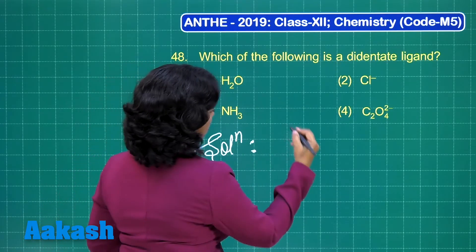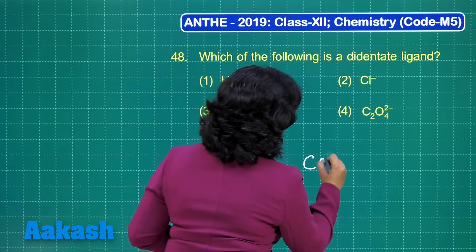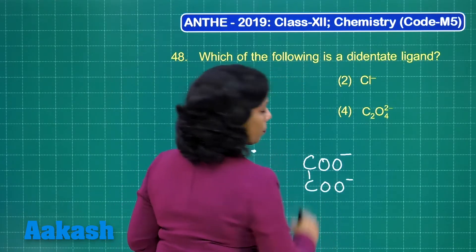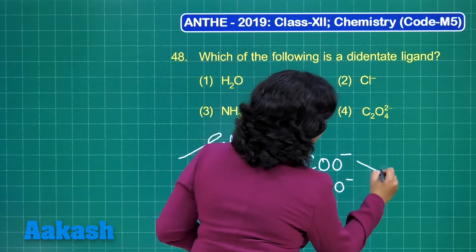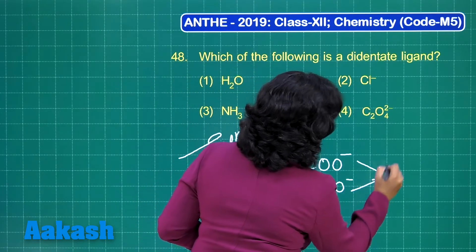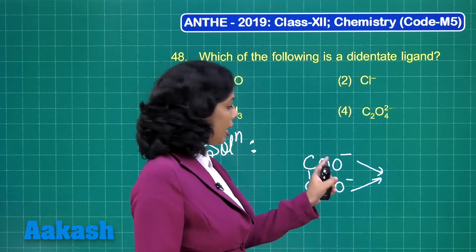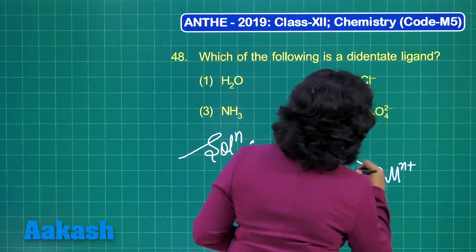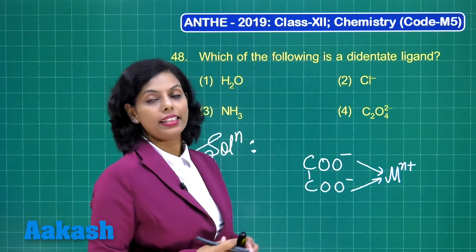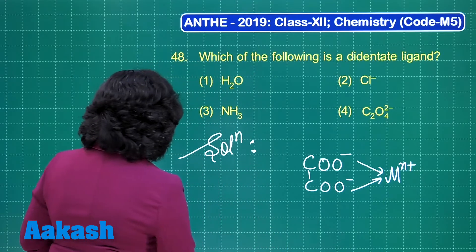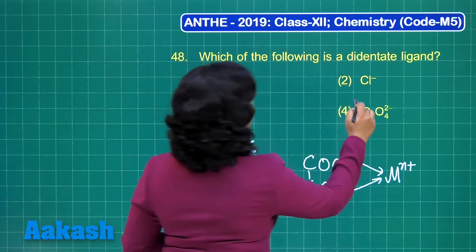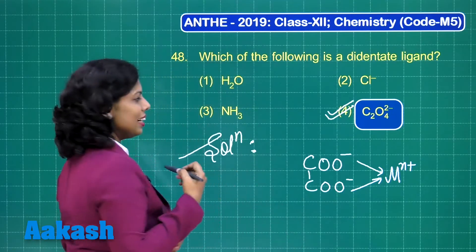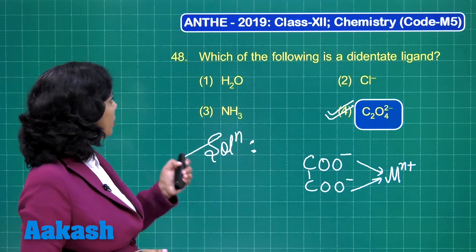The didentate ligand here is the oxalate ion. Looking at the structure of oxalate ion, when a metal ion comes in contact with it, it donates electrons through two donor atoms, showing its didentate nature. That's why the correct answer is option four.